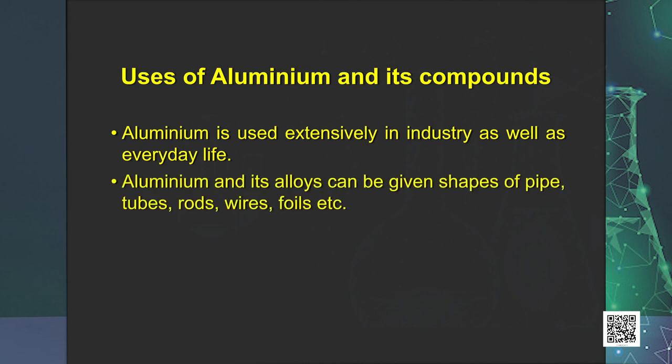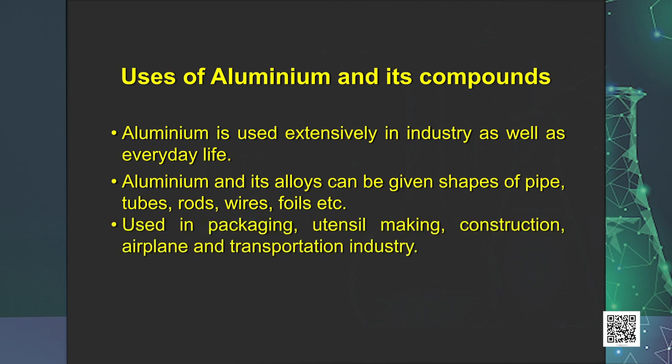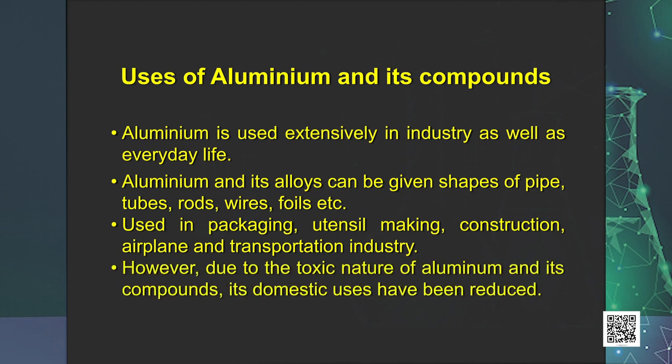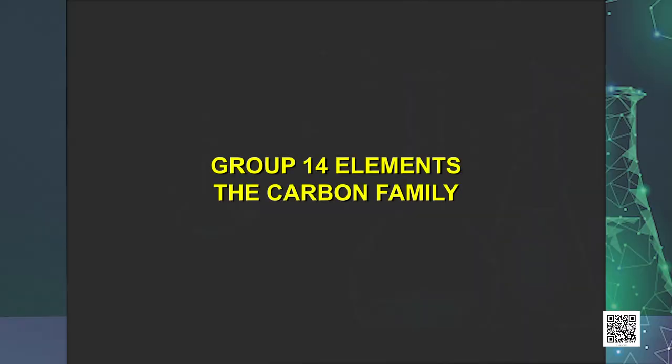Aluminium and its alloys can be given shapes of pipes, tubes, rods, wires, foils, etc., and are therefore used in packaging, utensil making, construction, airplane and transportation industries. However, due to the toxic nature of aluminium and its compounds, its domestic uses have been reduced. That is all we need to learn in class 11th for group 13.